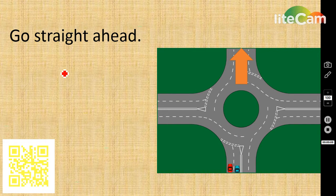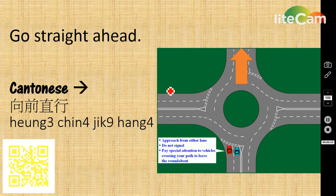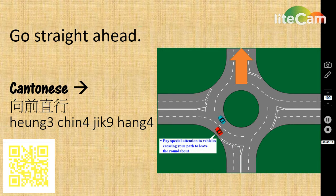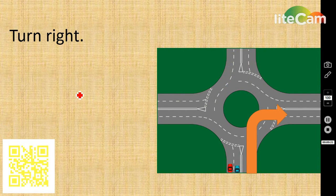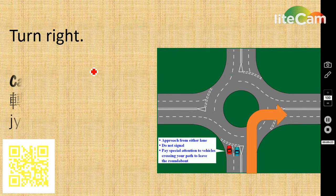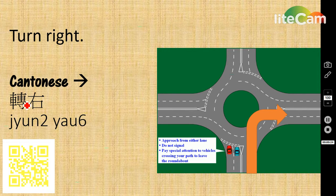For Go Straight Ahead in Cantonese, it is 向前直行. For Turn Right, it is 轉右.